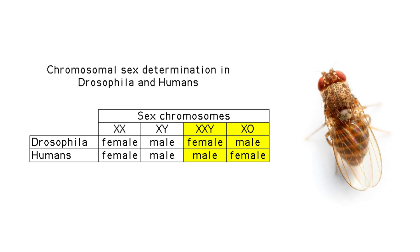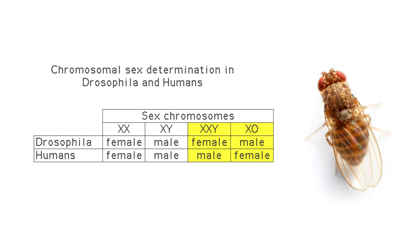In flies, the Y chromosome is not involved in determining sex. Rather, it contains genes active in forming sperm in adults.